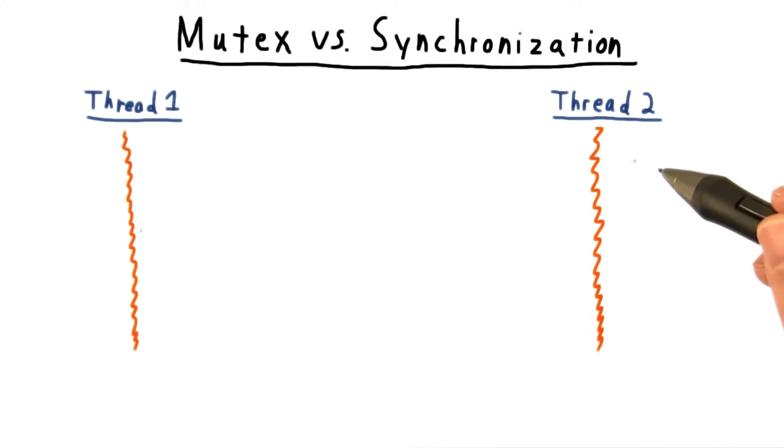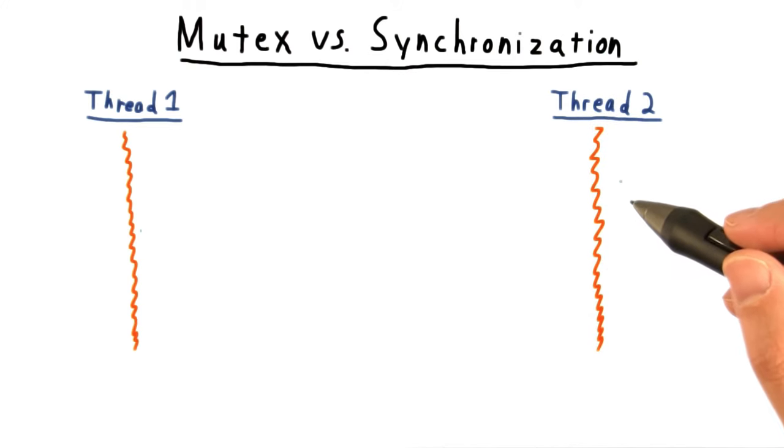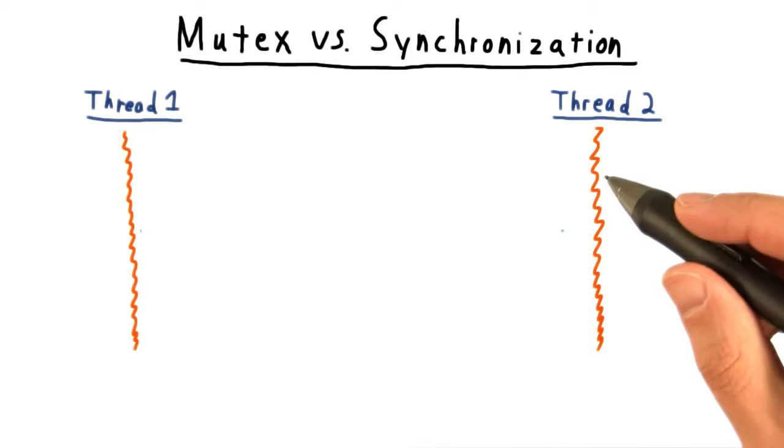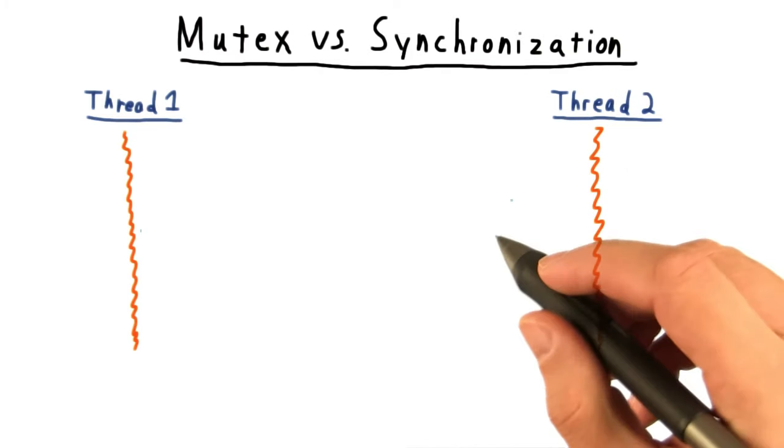Mutual exclusion, as we have seen, is about preventing two threads from accessing a resource, often a piece of memory, at the same time, regardless of exactly where they are in their execution.